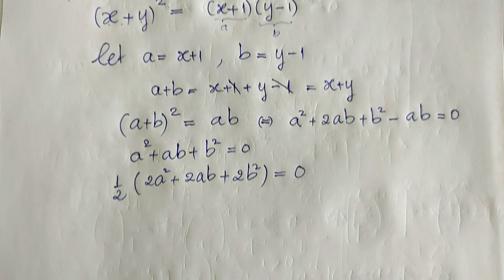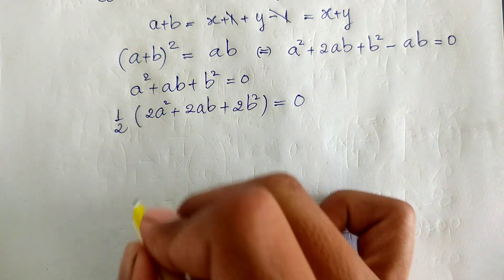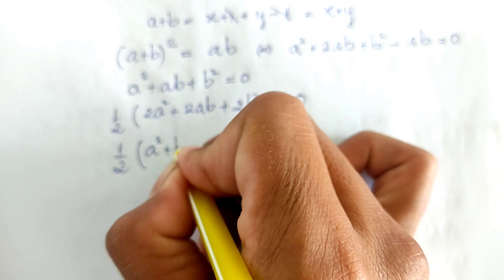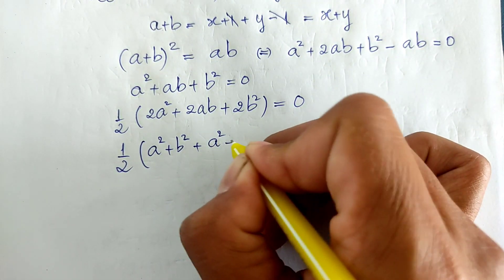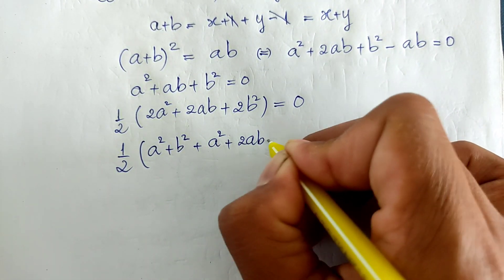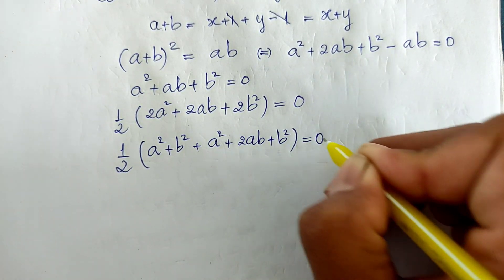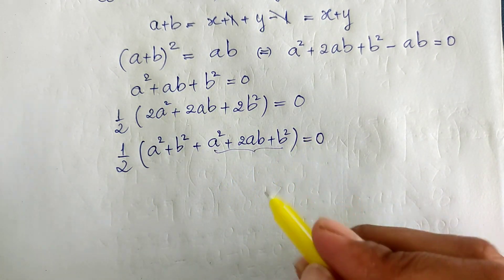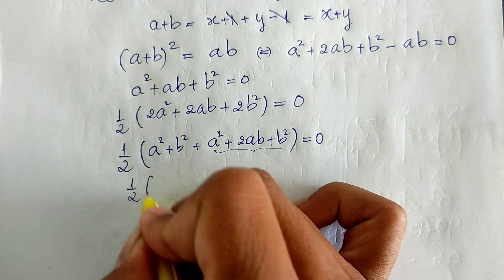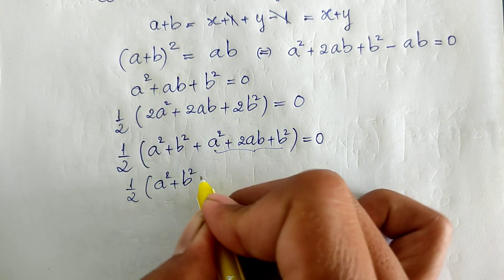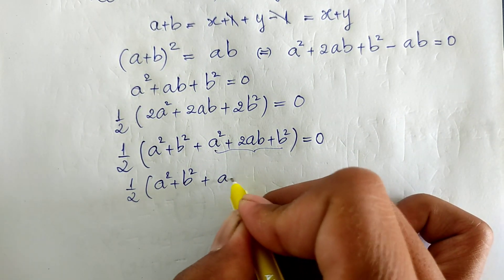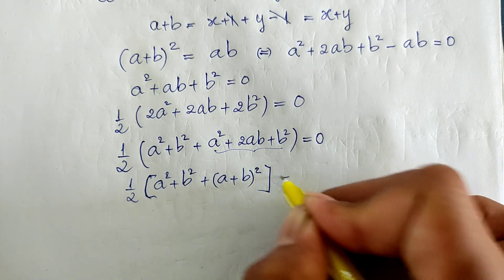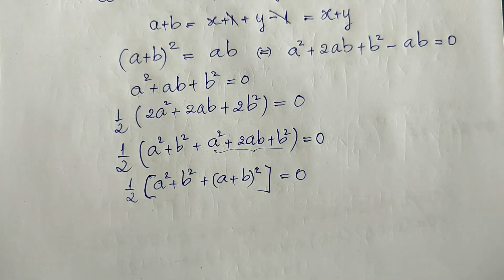We can rewrite this as one-half times (a squared plus b squared plus a squared plus 2ab plus b squared) equals zero. You see, this can be written as one-half multiplied by (a squared plus b squared) plus (a plus b) all squared, equals zero.